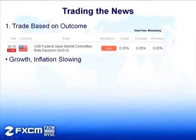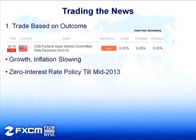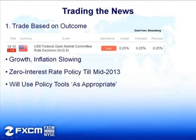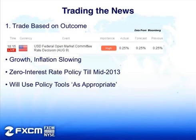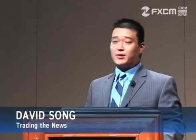With the Fed interest rate decision, this is the policy statement that followed after we got the rate decision. Basically the Fed said that growth and inflation was slowing. At the same time, they said they'll maintain the zero interest rate policy until the middle of 2013. Beyond that, they said they'll use policy tools as appropriate to stimulate the economy. So they're saying that growth and inflation will slow, they're going to keep rates low for a very extended period of time, and they might actually introduce additional measures to support the economy. In essence, this is fairly bearish for the U.S. dollar.